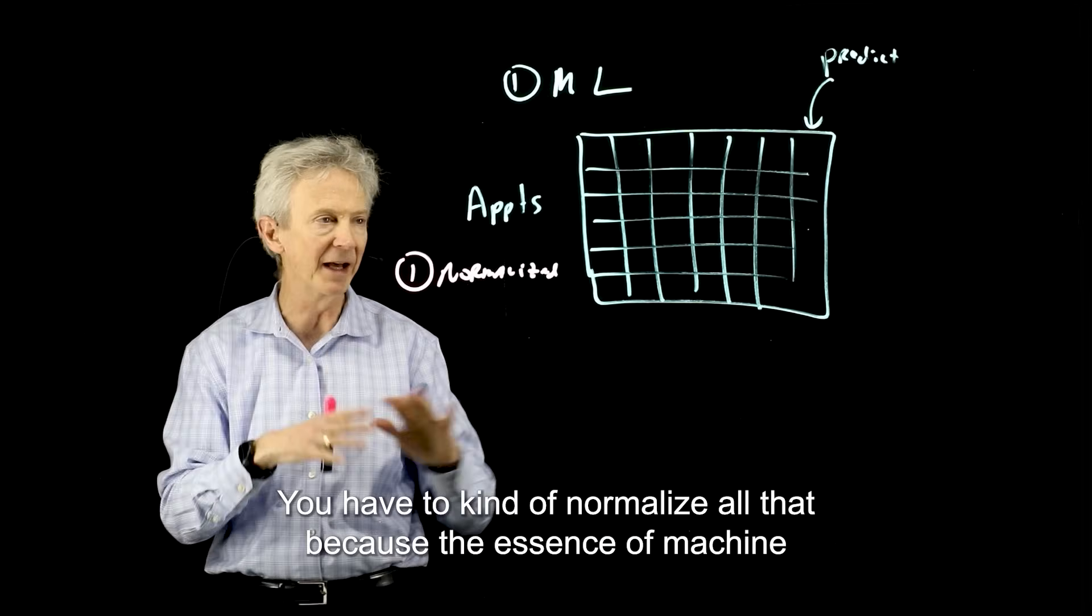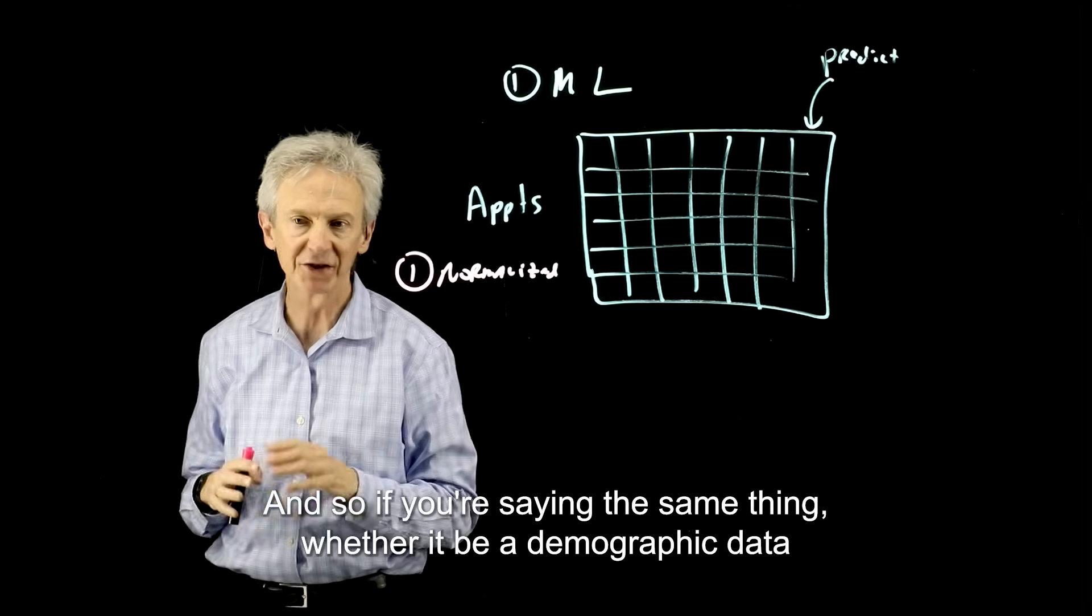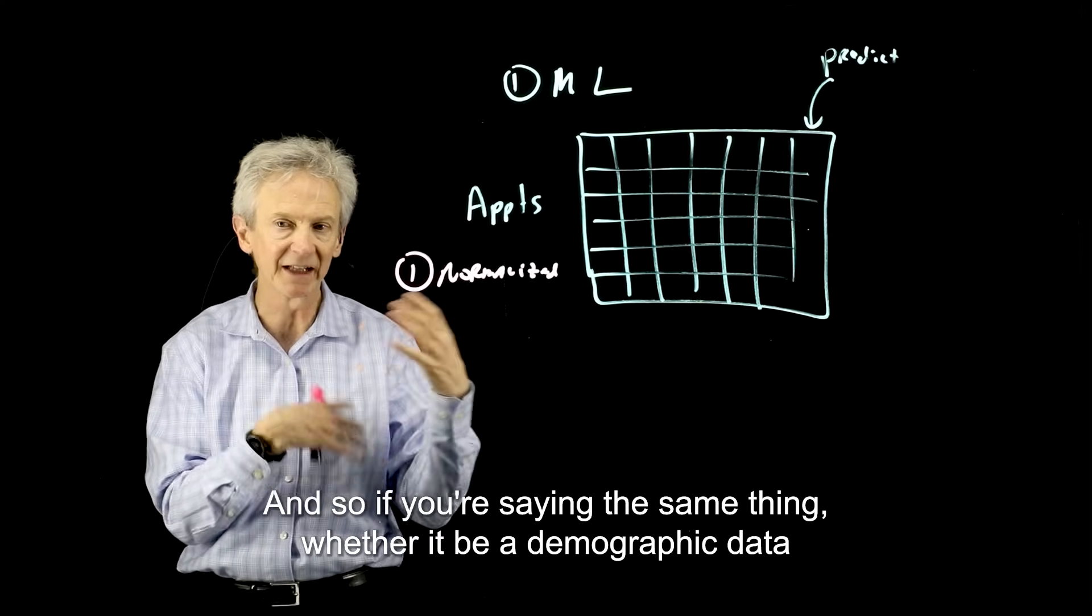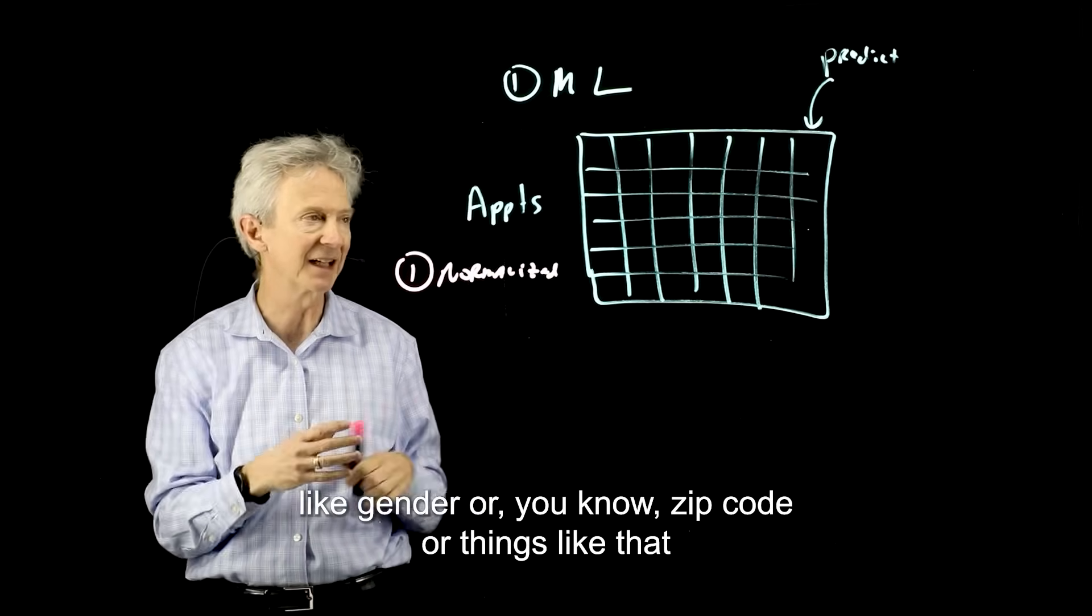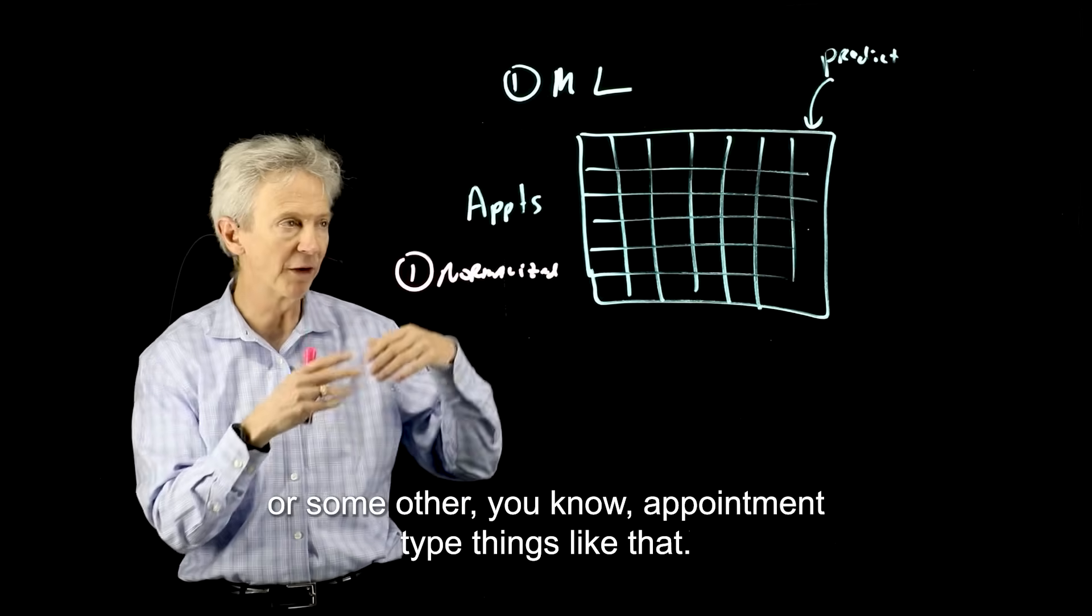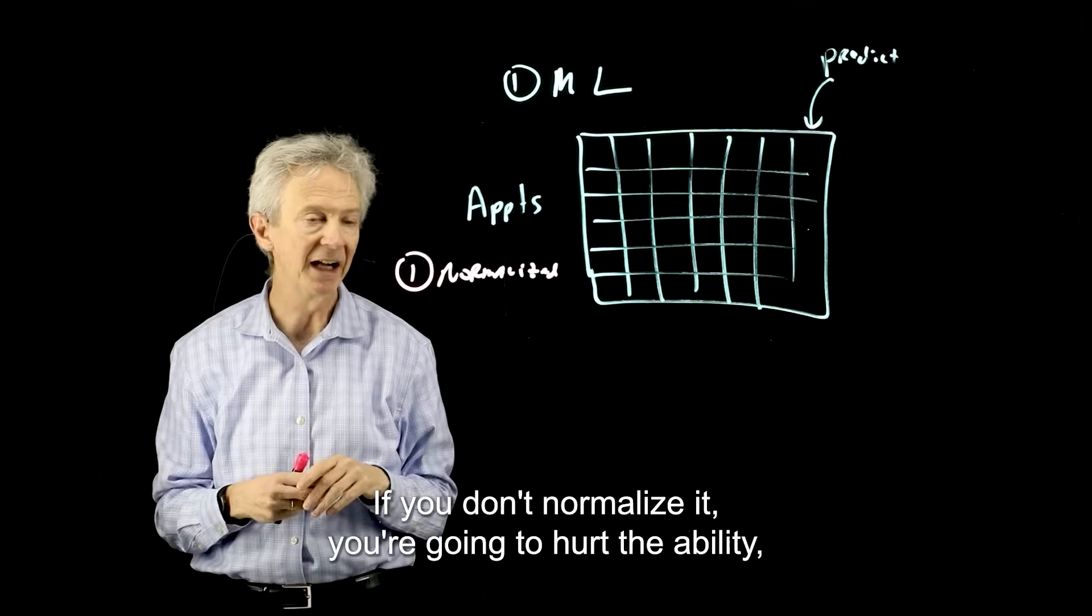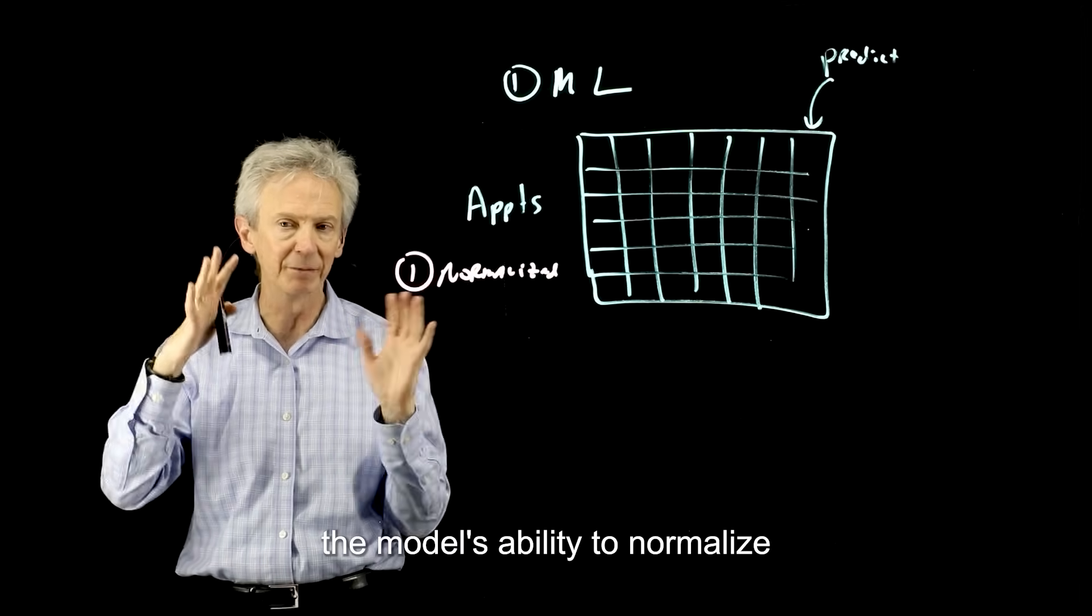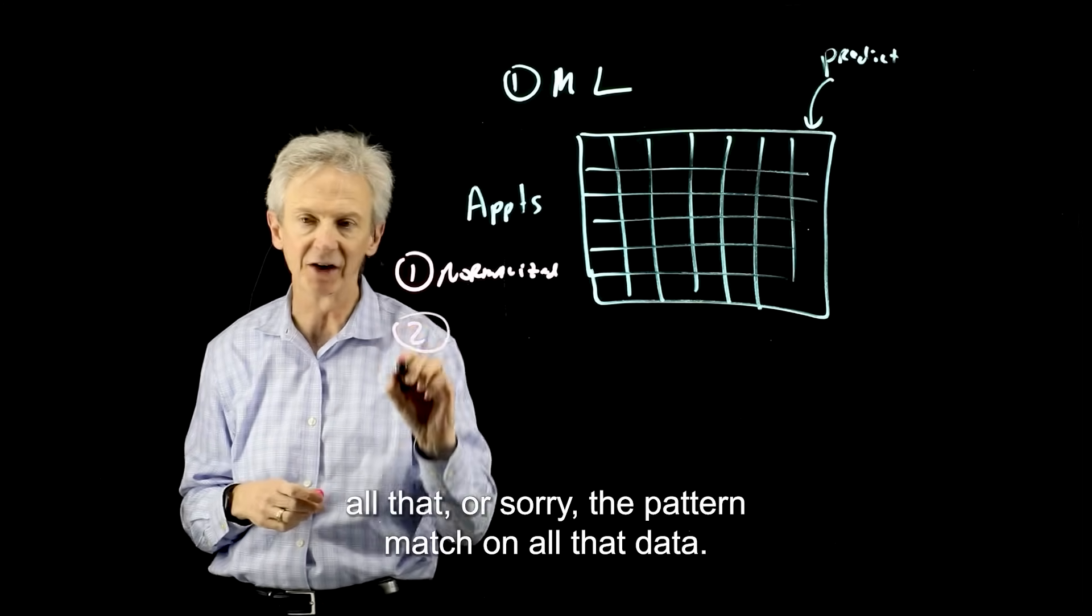You have to normalize all that because the essence of machine learning is to pattern match. So if you're saying the same thing, whether it be demographic data like gender or zip code or appointment type, if you don't normalize it, you're going to hurt the model's ability to pattern match on all that data.